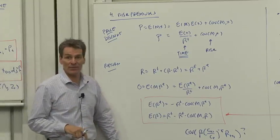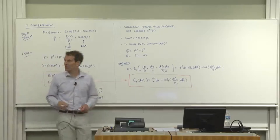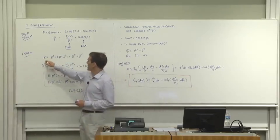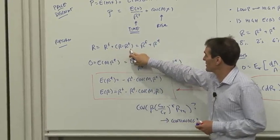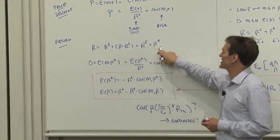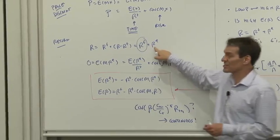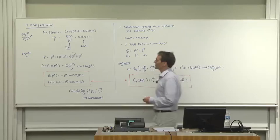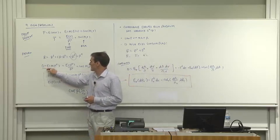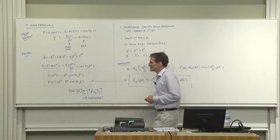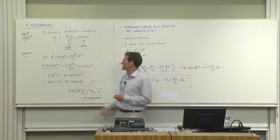Let's express that in terms of rates of return, which is more traditional in finance and in the empirical literature. We can break up any return into the risk-free rate plus the excess return — a zero-cost portfolio. The risk-free rate captures the time element, and the excess return captures the risk element. Starting with our basic pricing equation for excess returns, let's break it up similarly into the product and the covariances.